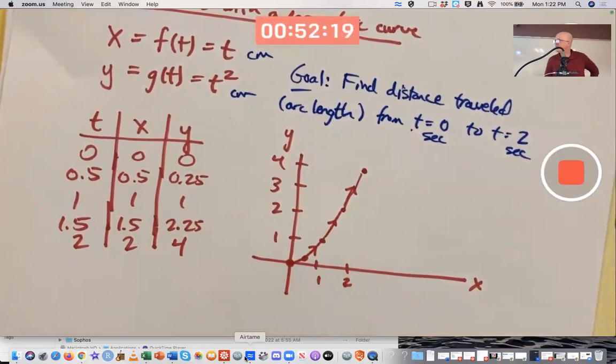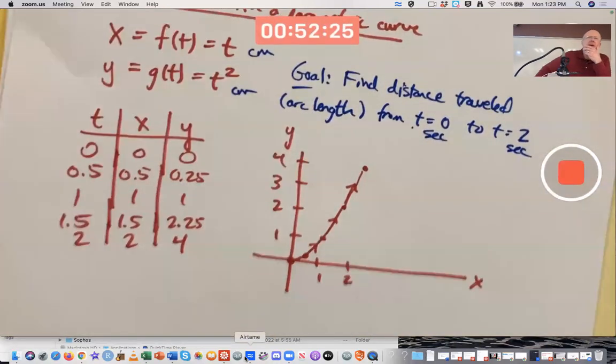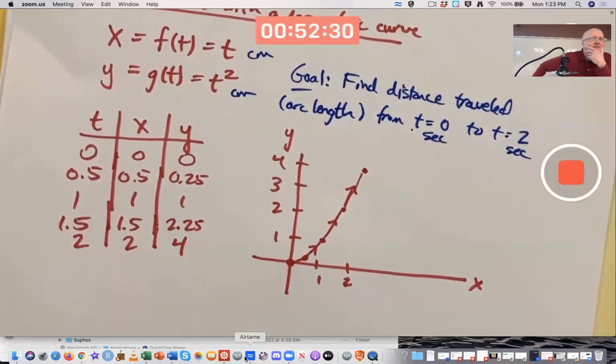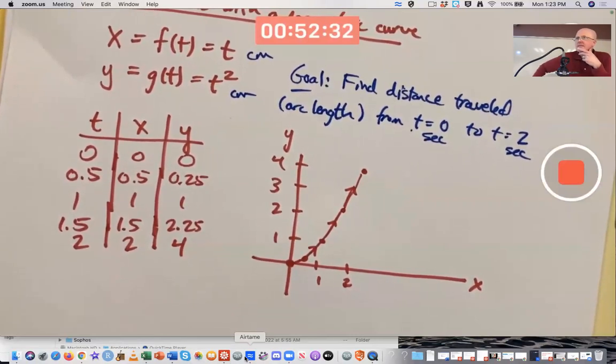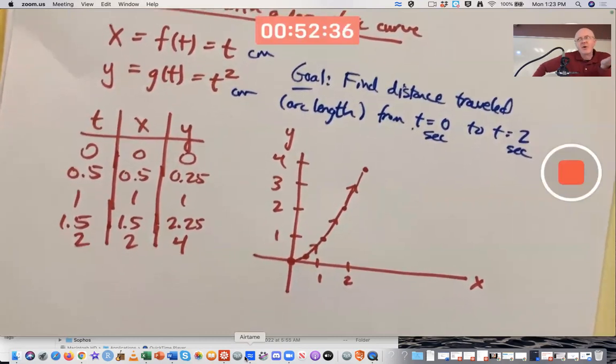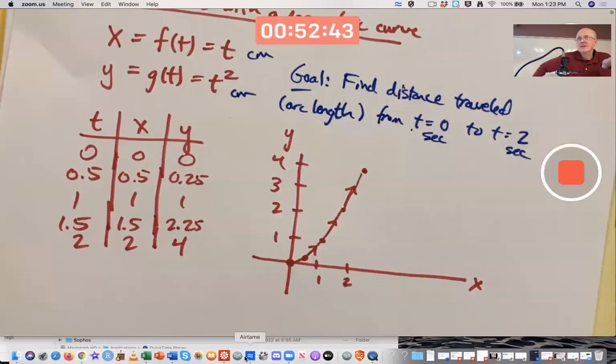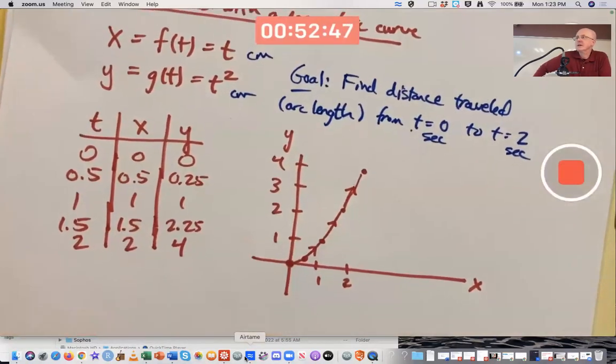But can we find it exactly? Yes, you can. How? By doing an integral. But wait a minute. Don't integrals give you areas? How could we find a length by doing an integral? Well, we've really done it before. When we integrated the speed, we got the distance traveled. Same principle holds here, except it's two-dimensional motion in a plane. It's the same principle.